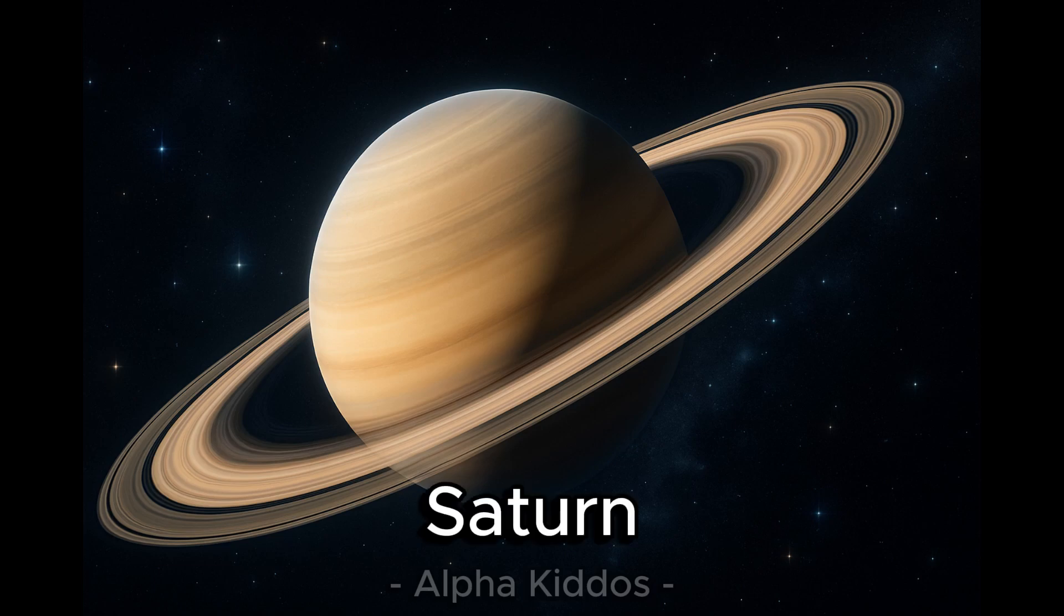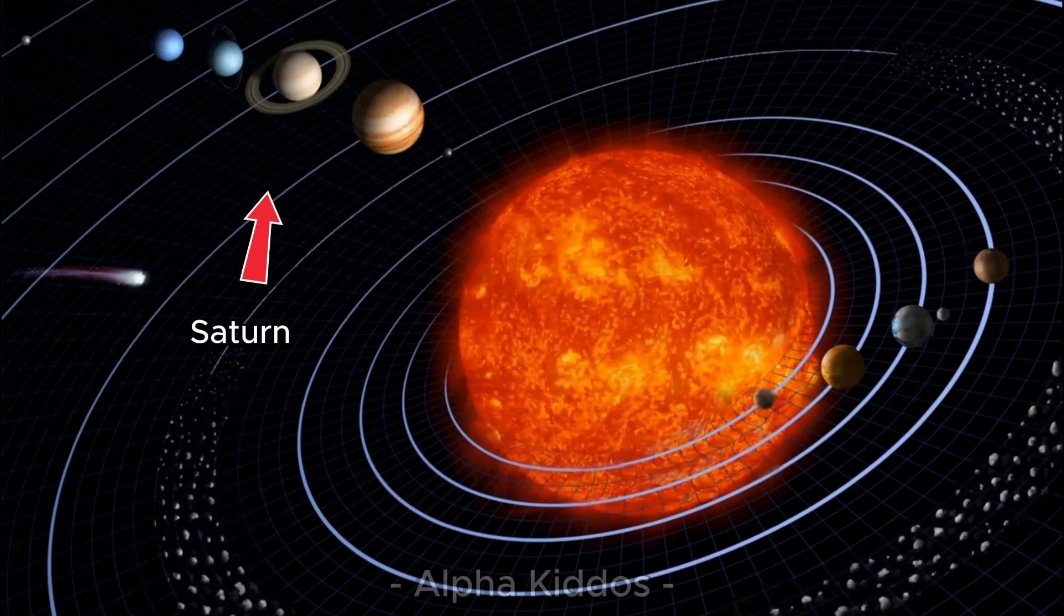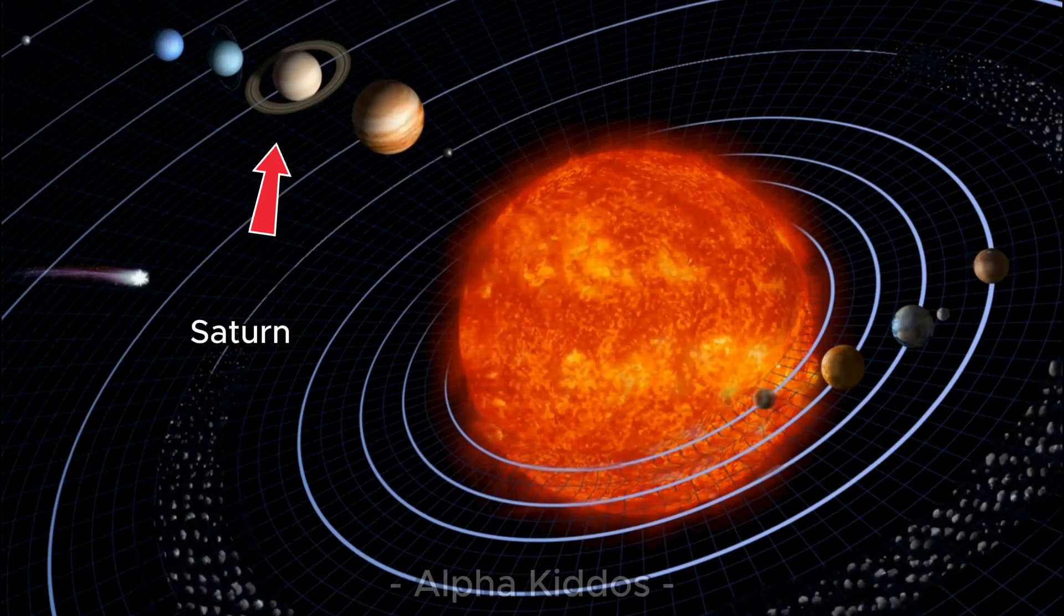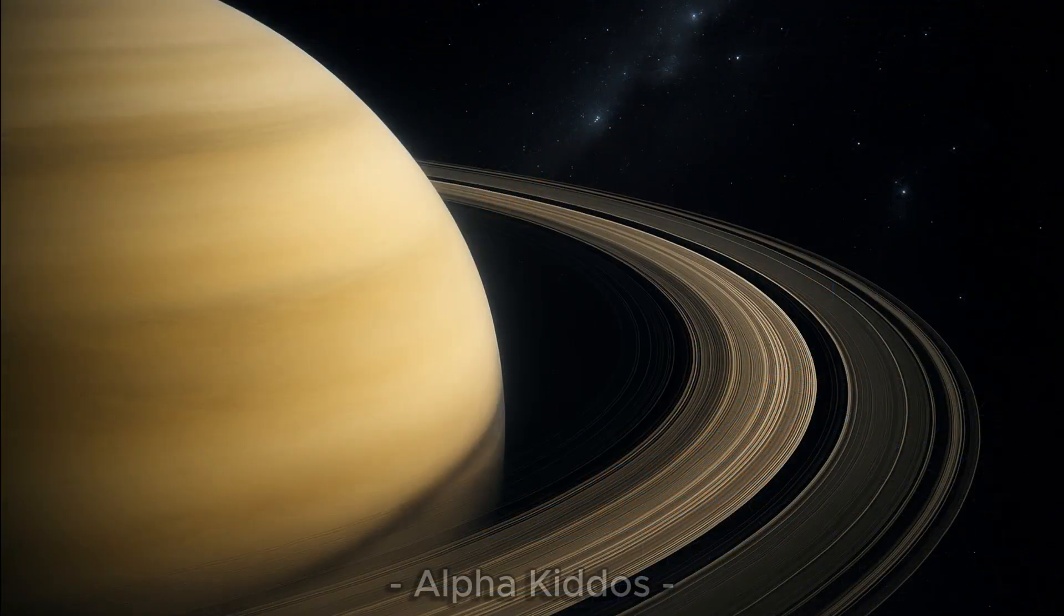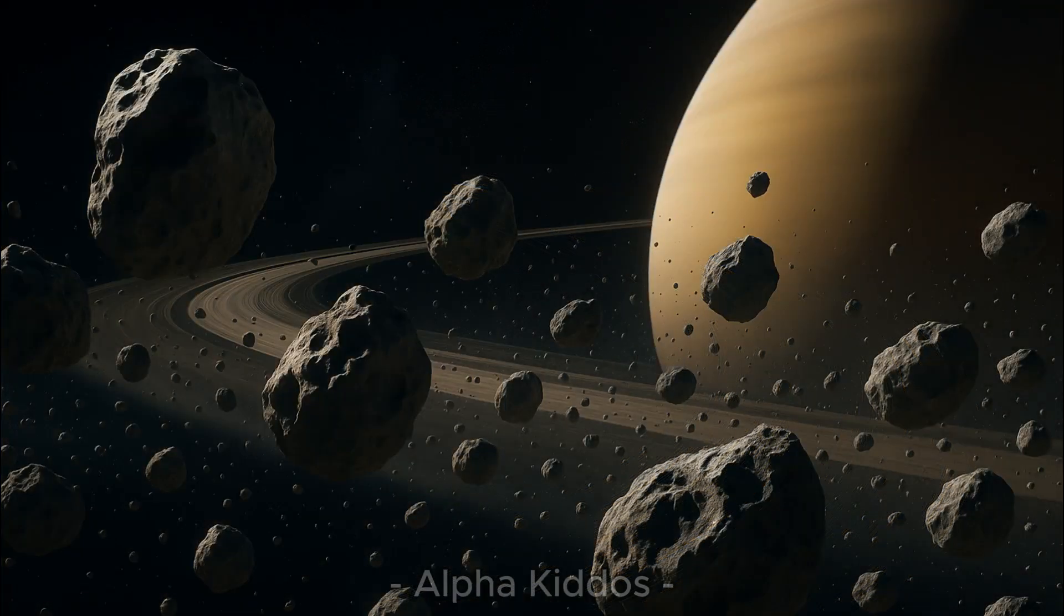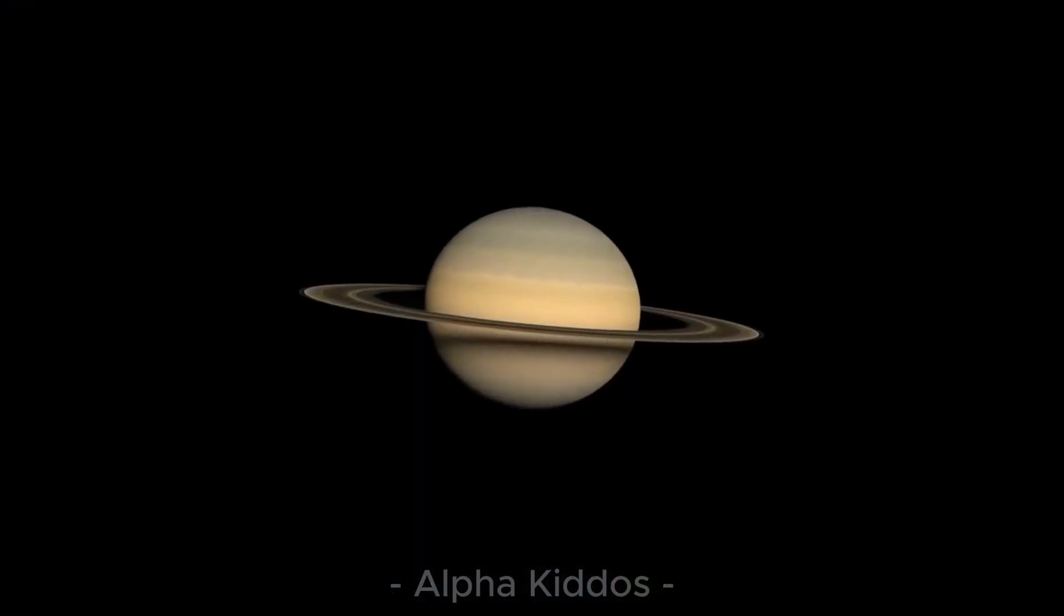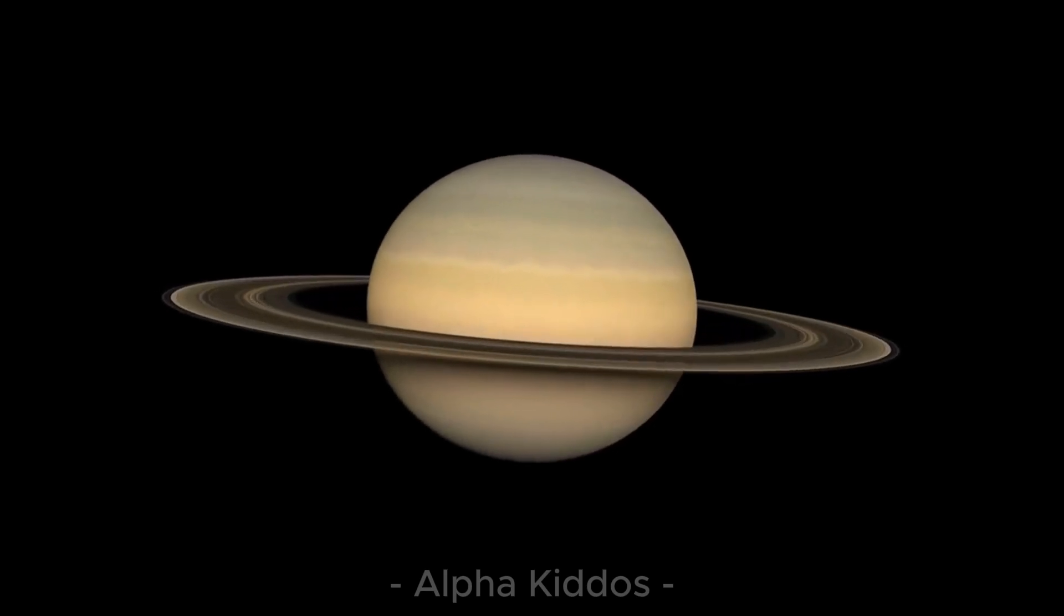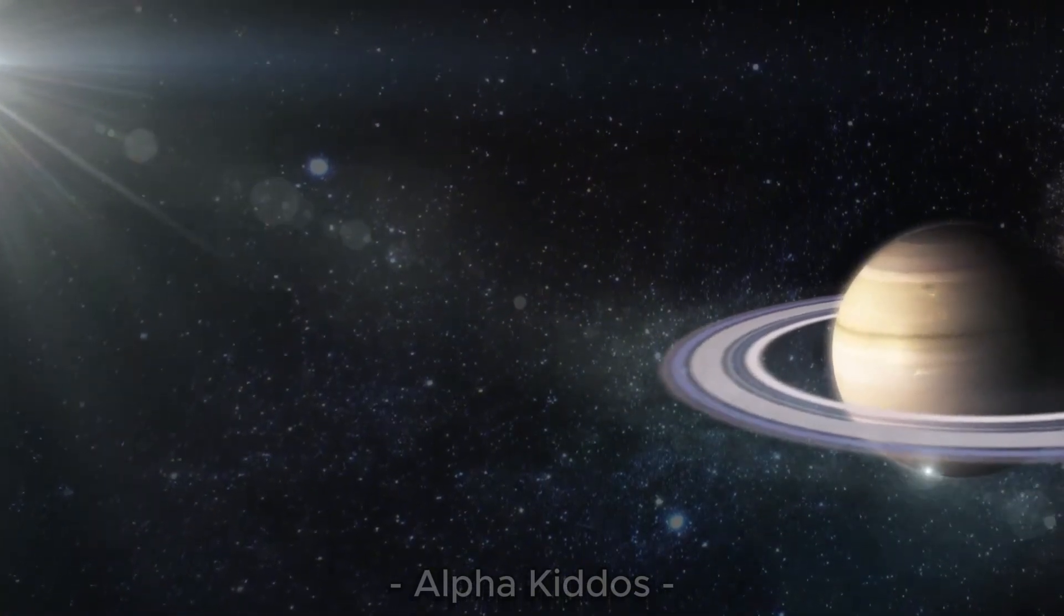Saturn. Saturn is the sixth planet from the Sun. It's huge, more than nine times the size of Earth. The most beautiful part is its rings. Saturn's rings are made of ice and dust, very wide but super thin. Saturn has hundreds of moons. The most famous are Titan, which is bigger than Mercury, and Enceladus, that sprays icy water from its surface. Wow, that's amazing. Saturn truly is a planet full of wonders.